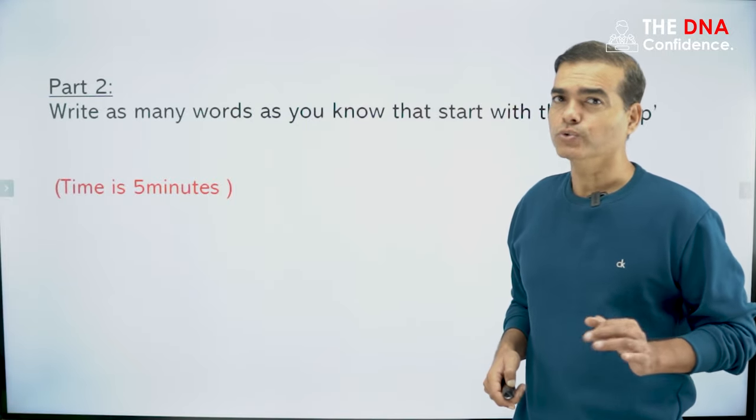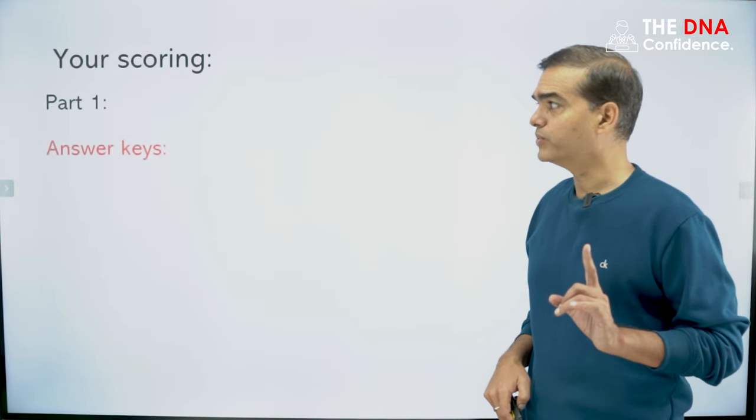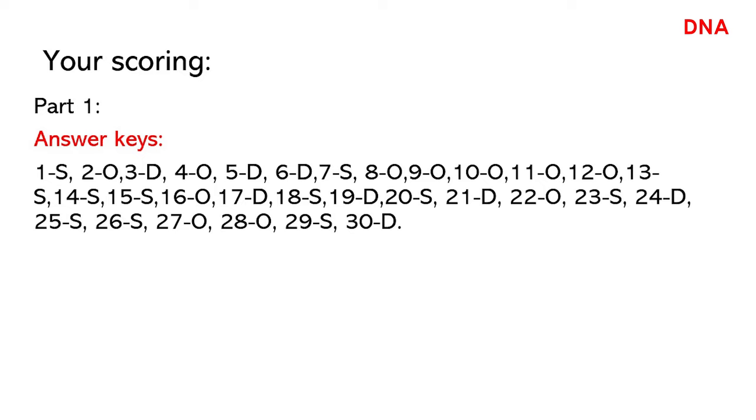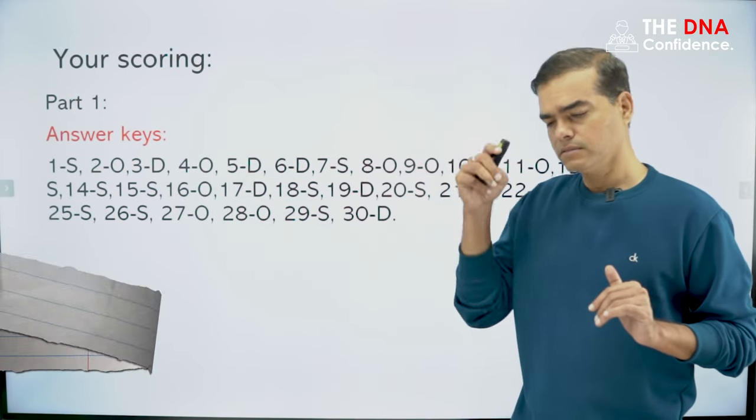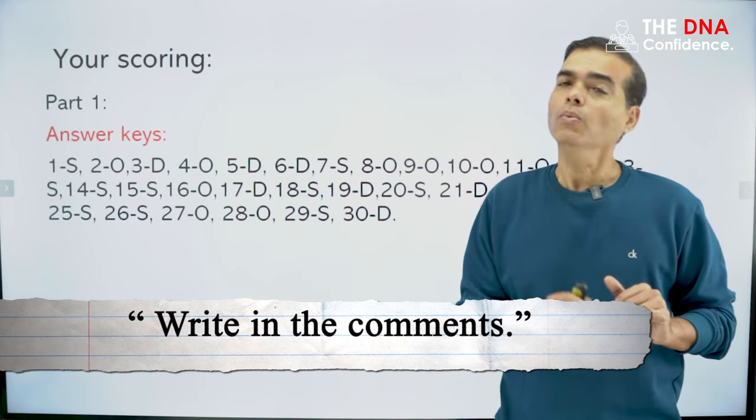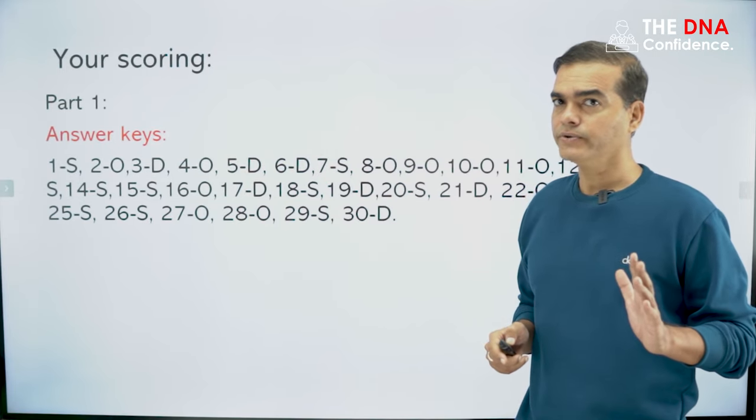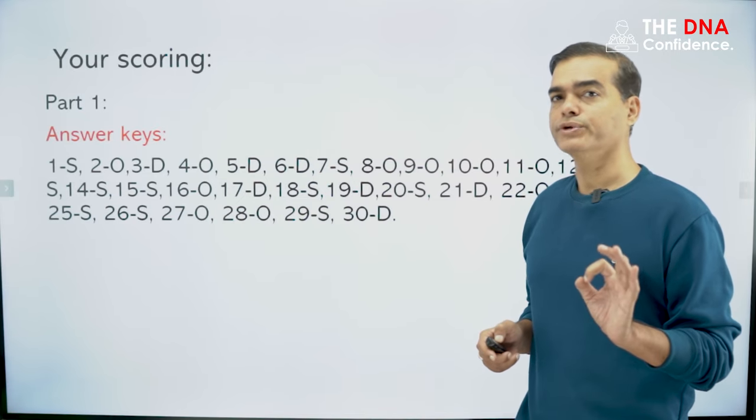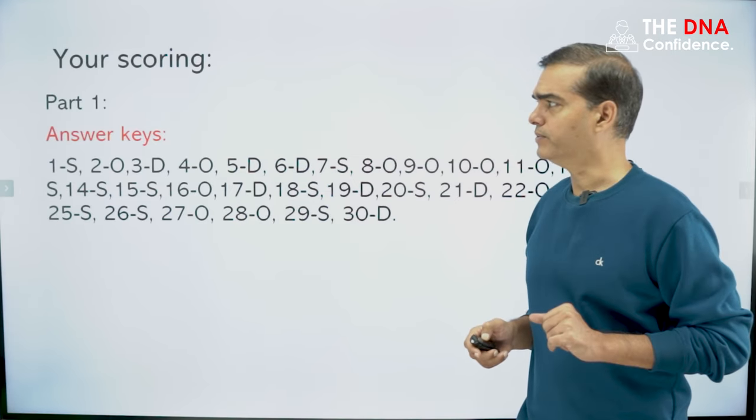Let us move forward. Now let us calculate your score. See how to calculate your score. Your scoring. Part one scoring will be in this way. Answer key is here. I will put this answer key in front of the screen. I will blur myself. This is the answer key. Check it. One more thing: if you feel like, no sir, my answer is right, write in the comment. I will clarify your doubts. Why your answer is not right and why these answers are right. I will clarify in the comment section.